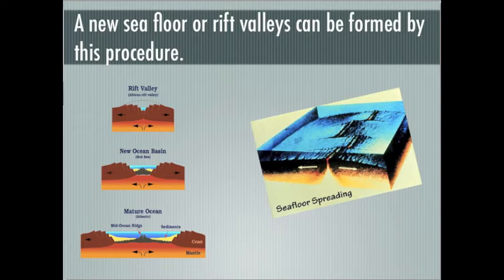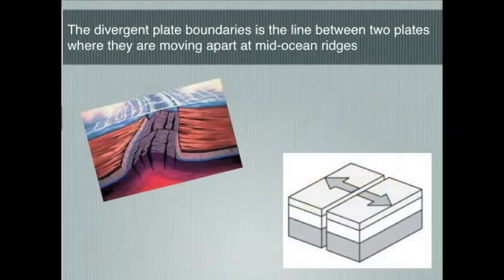It separates the Eurasian plate and North American plate in the North Atlantic, and the African plate from the South American plate in the South Atlantic. The ridge extends from a junction of the Mid-Arctic Ridge northeast of Greenland and southward to the Bouvet Triple Junction in the South Atlantic.